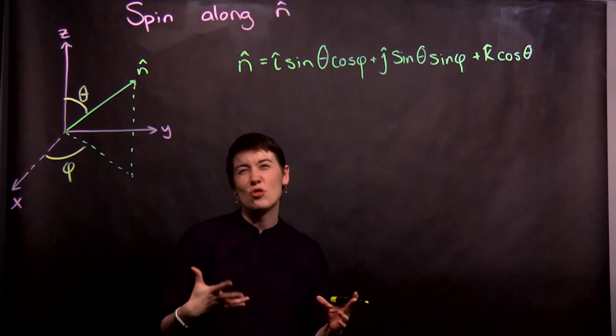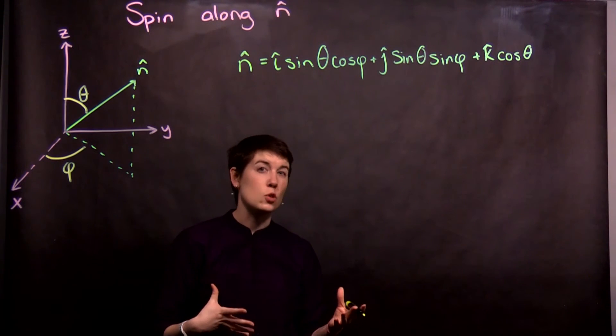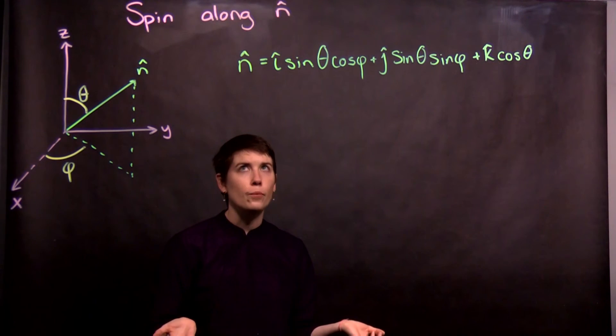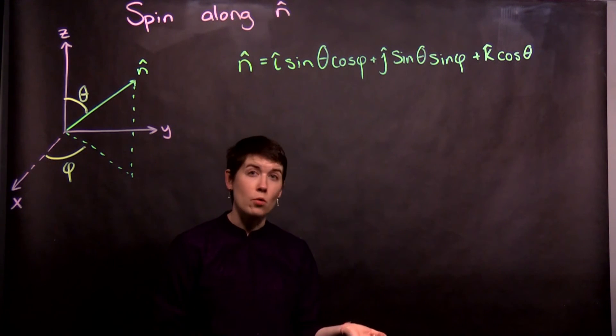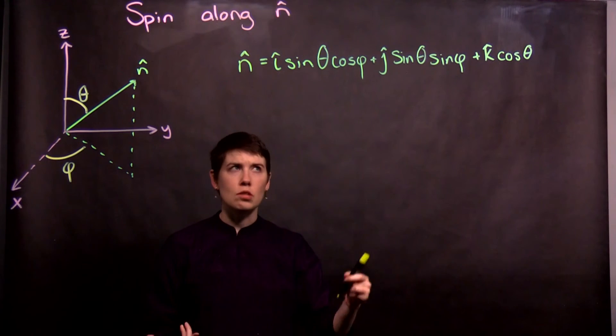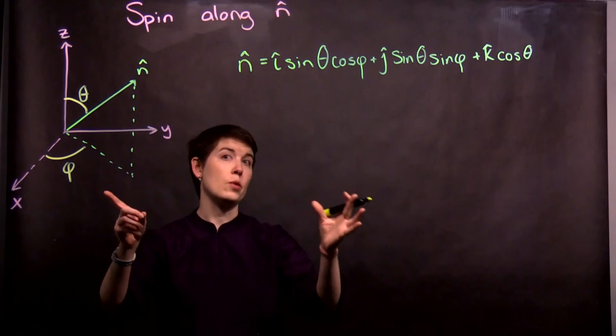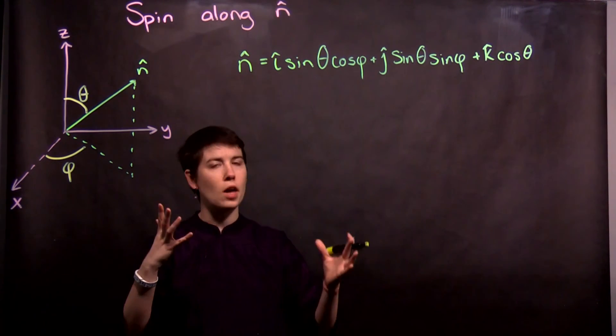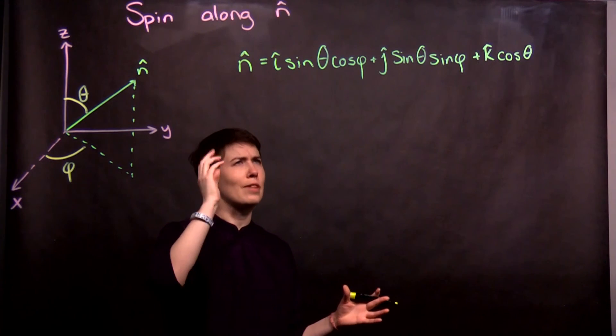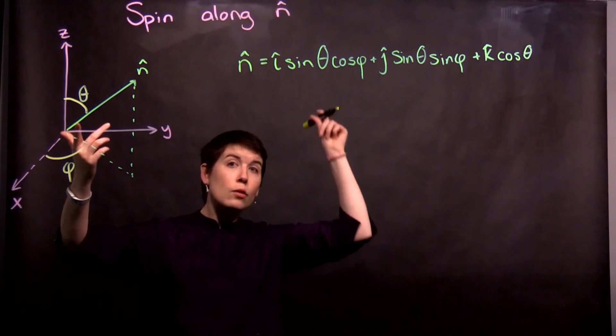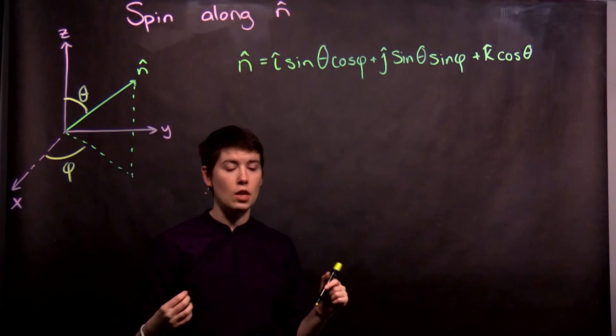And this is something that, again, you should either be able to kind of derive from first principles or know where you can look it up. In my class, I don't ask you to memorize a lot of formulas. This is something that I would get to by actually doing that check. I know roughly the form it has, and then if I just happen to forget which ones have sines and cosines, I would check by drawing this and going through those special cases.